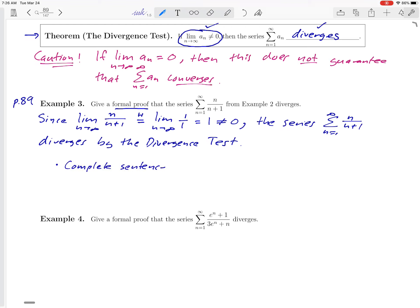So let's talk about just a couple of those. One thing: when you write a mathematical proof, you want to use complete sentences. Notice that the argument that we just wrote, instead of just being a series of calculations, it was a sentence. Since the limit is not equal to 0, the series diverges.